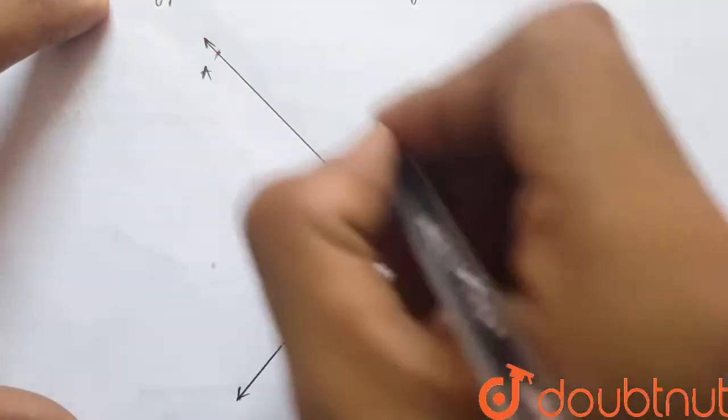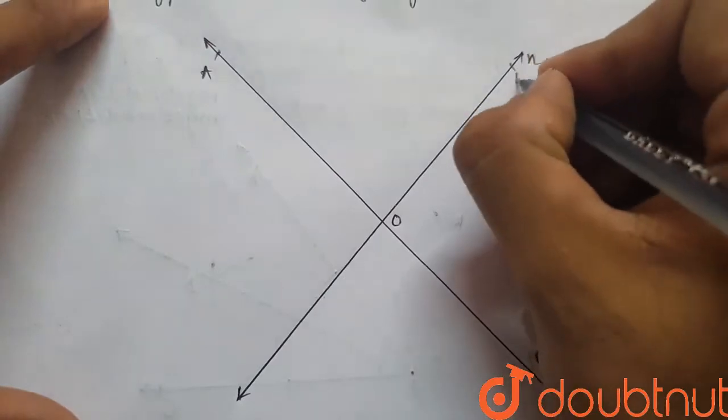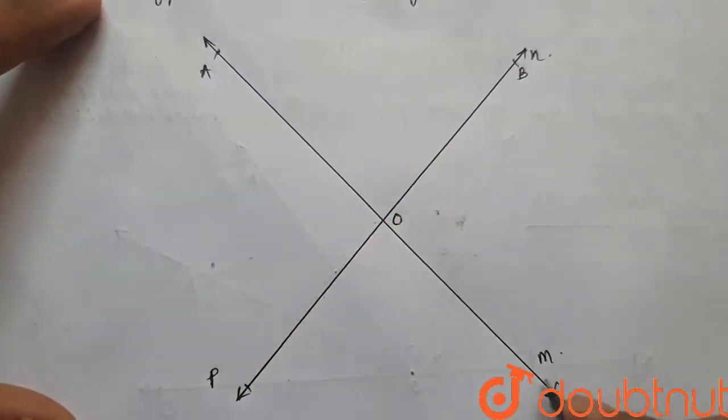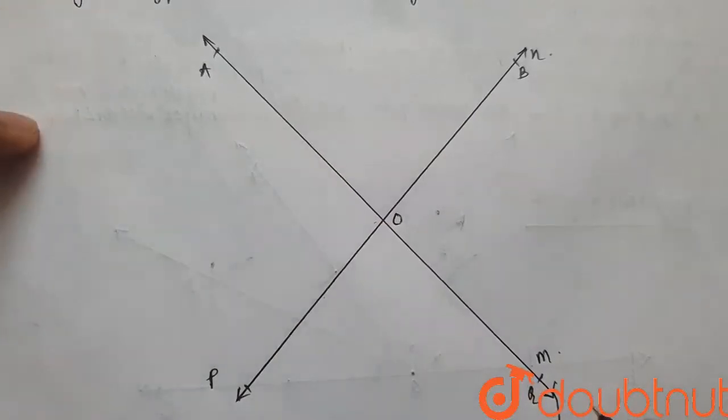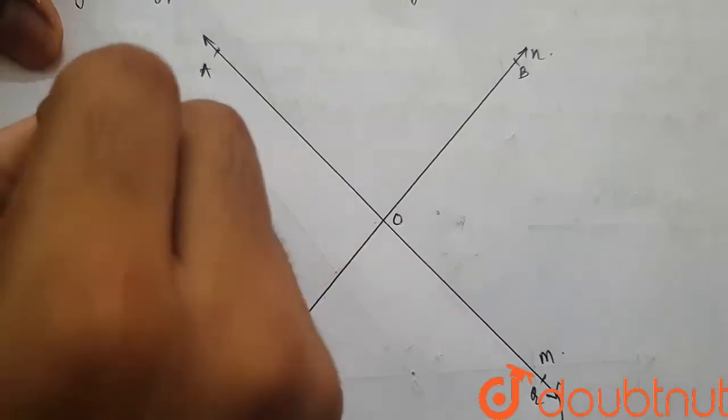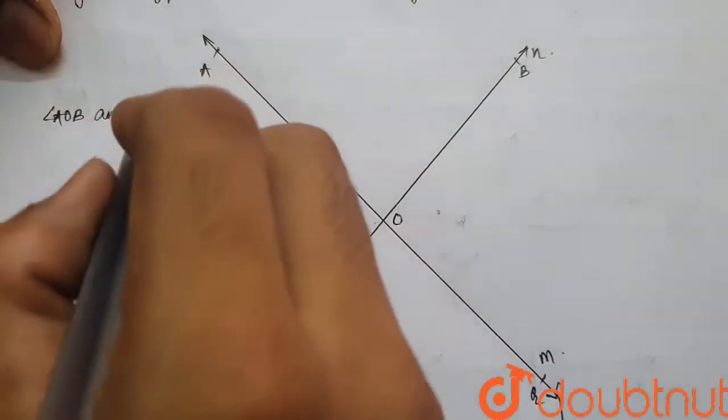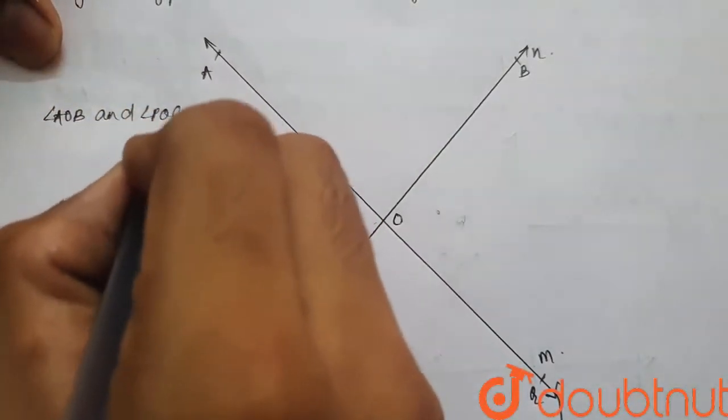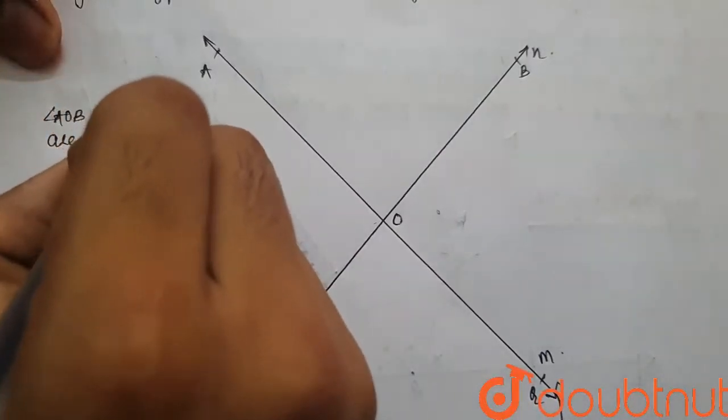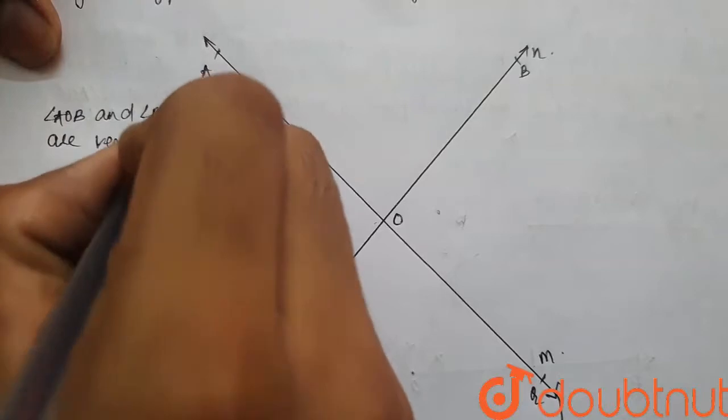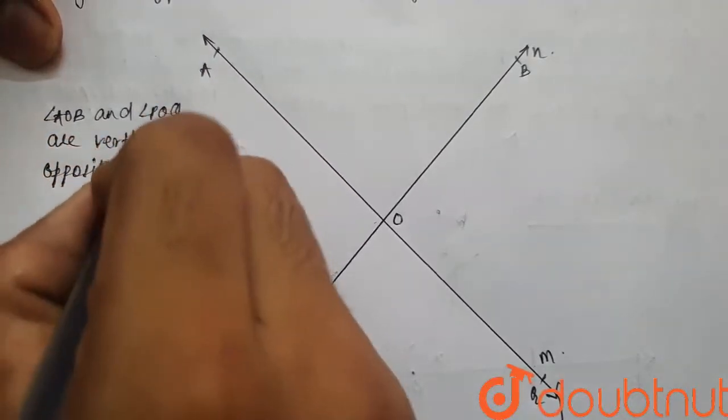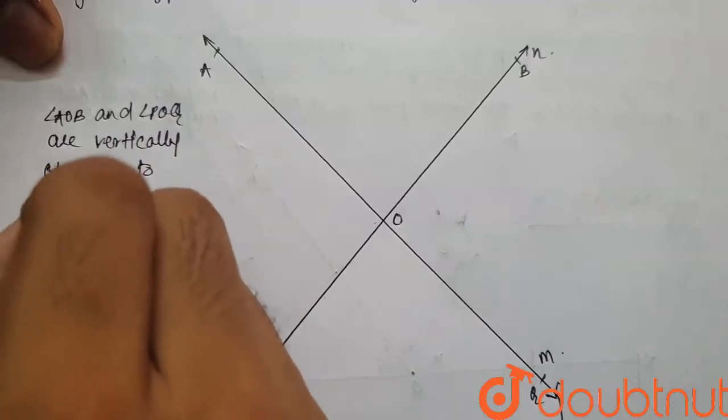So let's name these angles. Let's name this A, O, B and angle P, O, Q. And write it here: angle AOB and angle POQ are vertically opposite to each other.